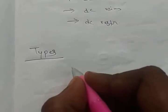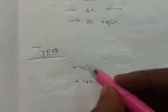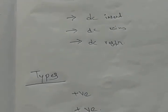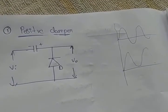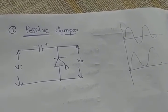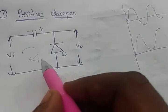Coming to the types of clampers, we have two types: positive clamper and negative clamper. A positive clamper is used to fix the negative extremity to the positive reference level. In a negative clamper, we fix the positive extremity to the negative level or zero level.